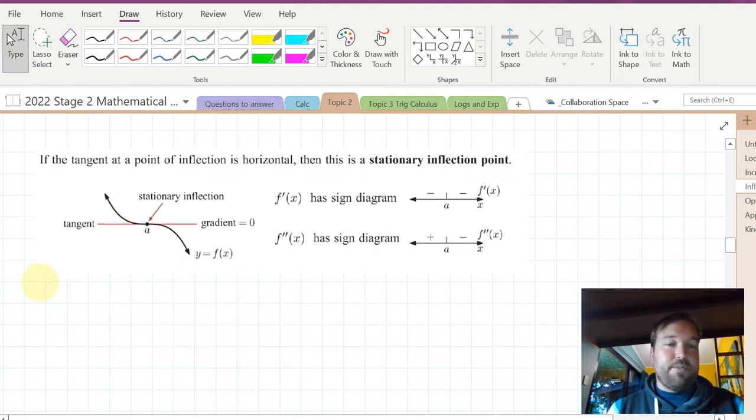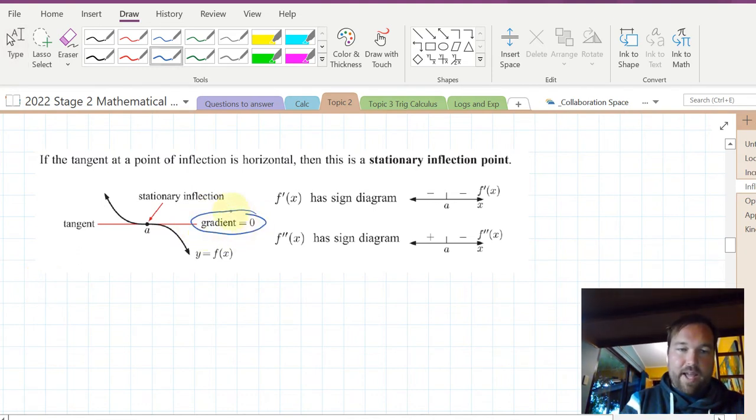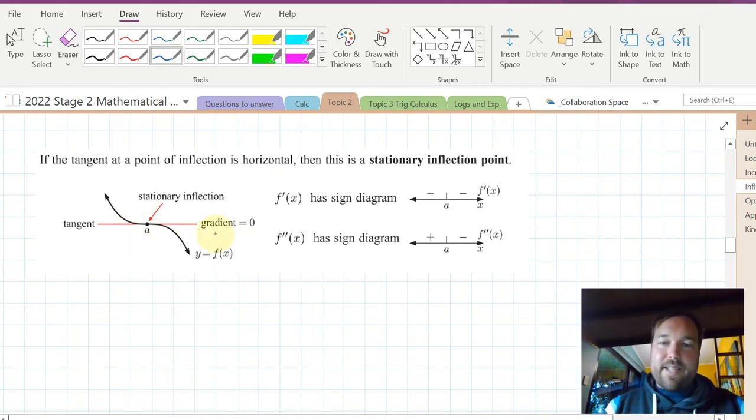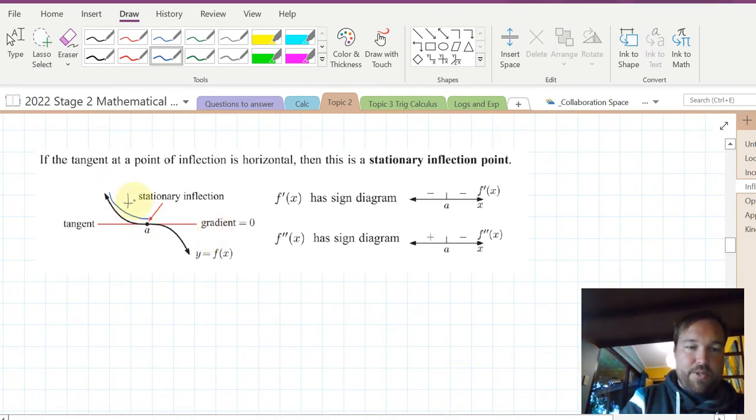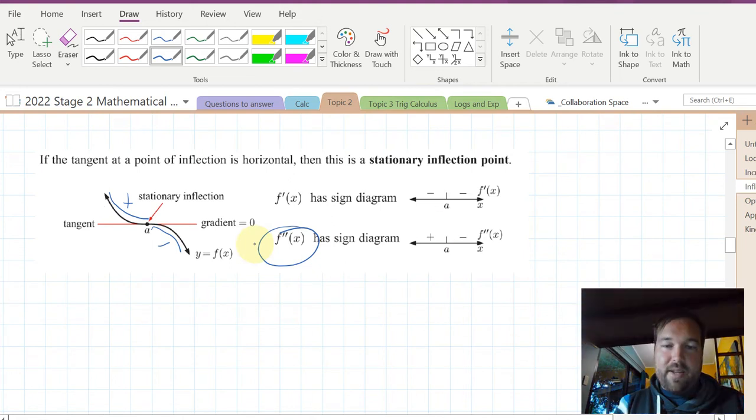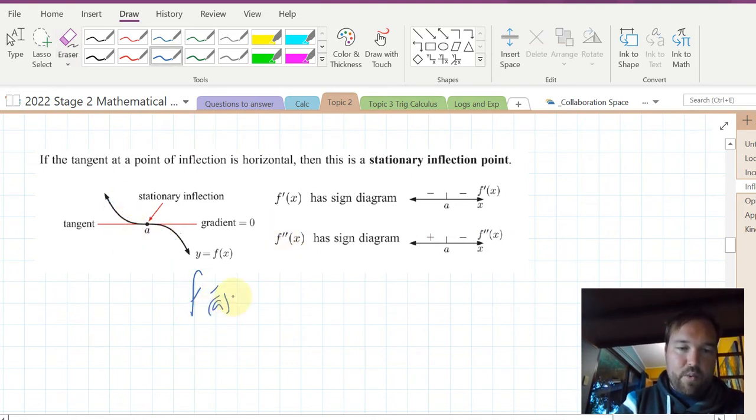Sometimes we have a special type of inflection point. If the inflection point has a gradient at that point of zero, then we would say that it is a stationary inflection point. So, in this case, we have a curve which is positive, and here, which is negative. There is a sign diagram change of sign here, positive to negative in the second derivative. But the first derivative also has a zero. At this point, f'(a) would equal zero. And then, you have a sign diagram of negative, negative.